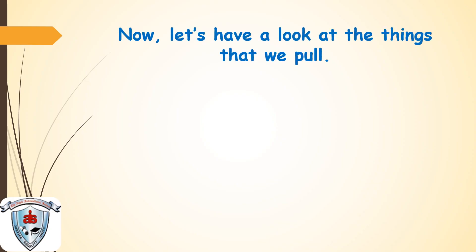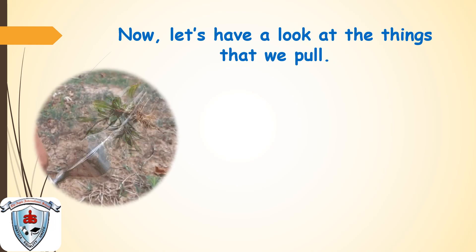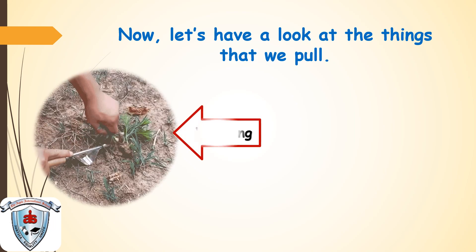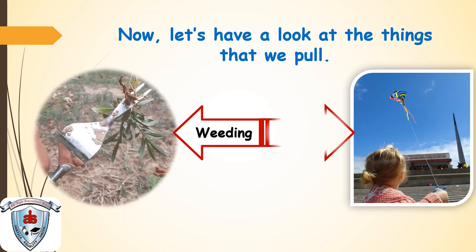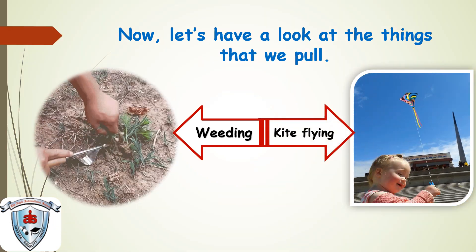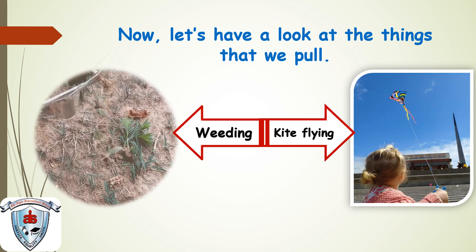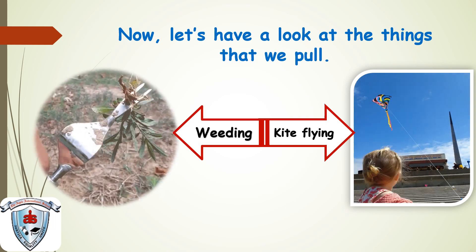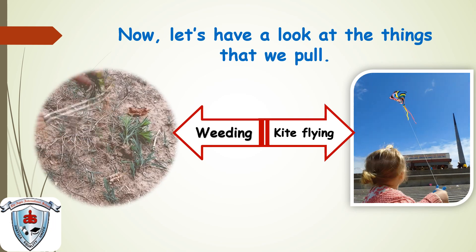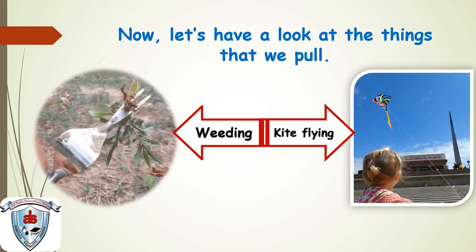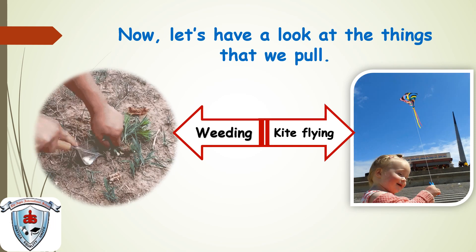Now, let's have a look at the things that we pull. Look at that. It's weeding. Kite flying. So, what is happening here? The man who is weeding, he is pulling the grass out. So, when he pulls the grass, it comes out of the ground.